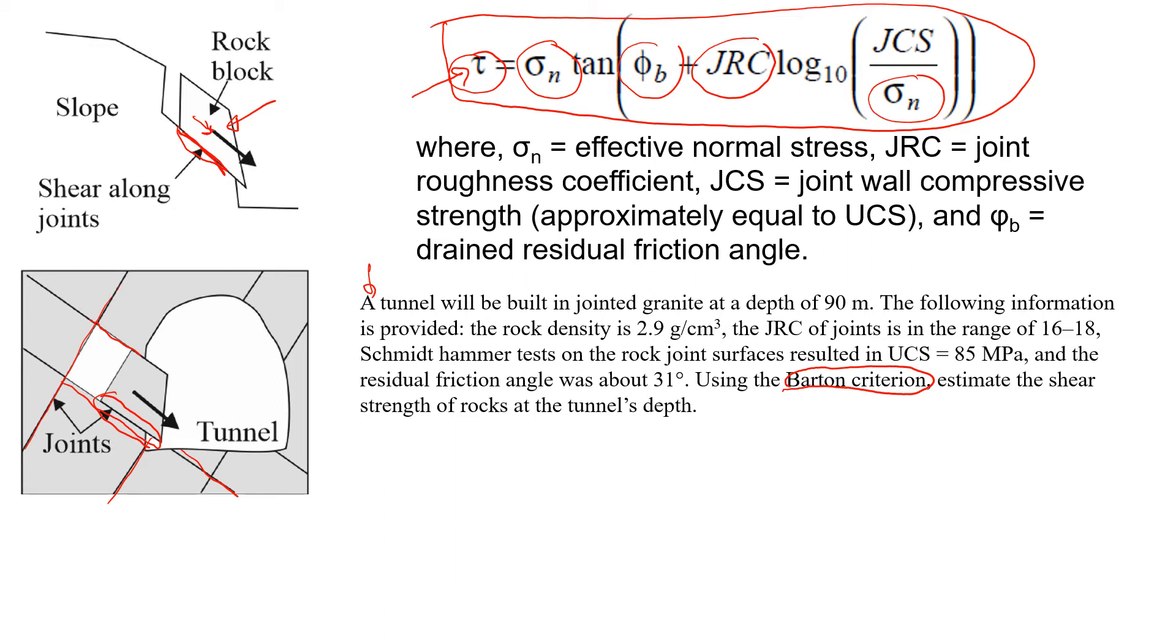Another component in this equation is JCS. That one will show the strength of rock surface. So if we look at this rock surface here for example, that will be the strength of that rock material - that part of the block.